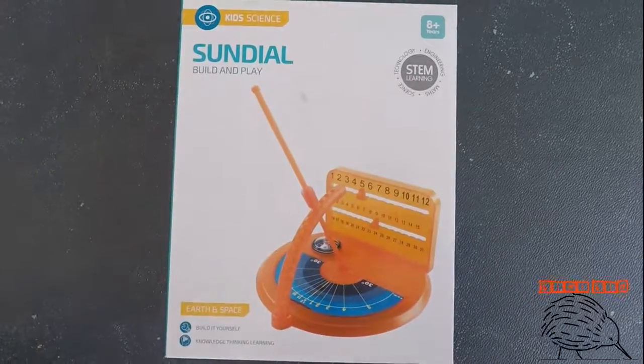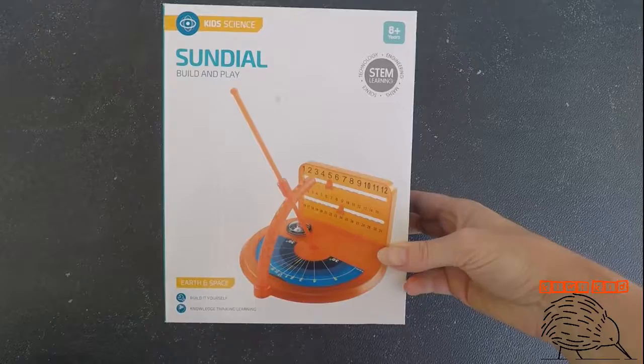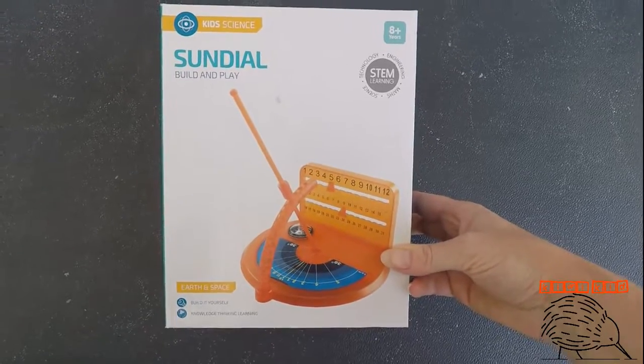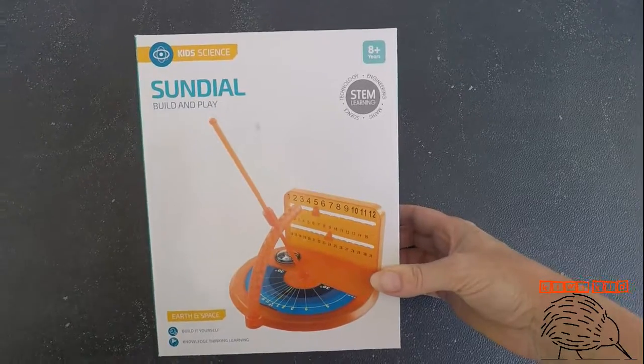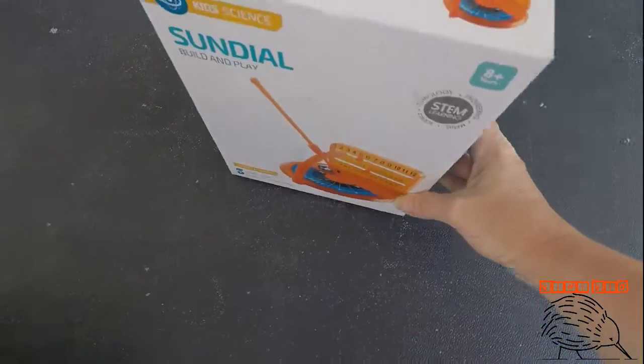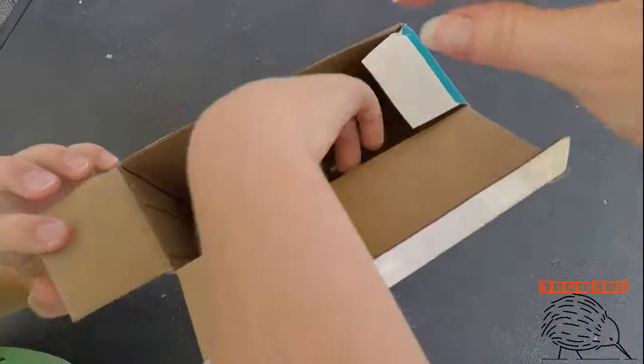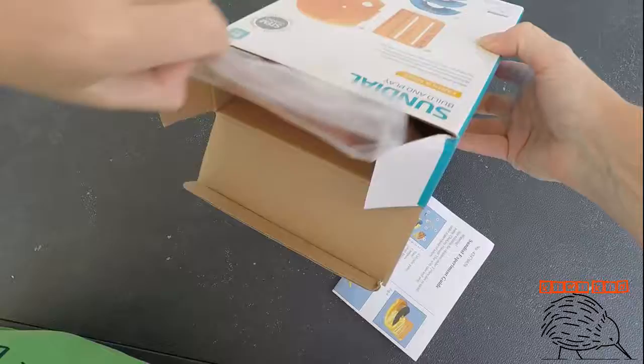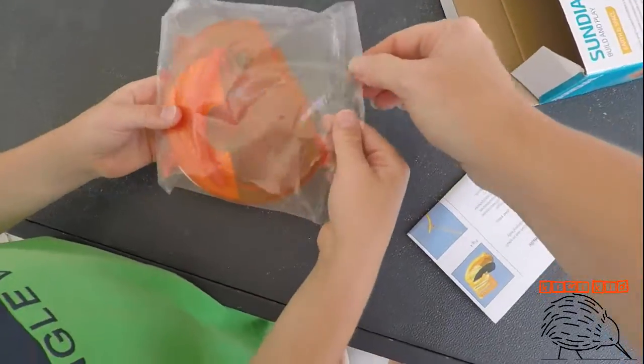Welcome to another edition of Kiwi Kid. Today we're going to build a sundial. We got this one from Kmart, I think it was about 10 or 12 dollars. Shall we open it up? This one is designed to work in New Zealand and Australia, and here are our parts.